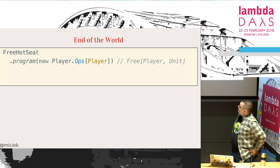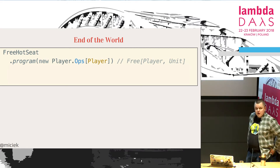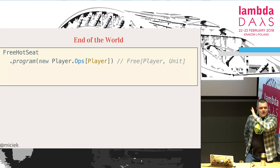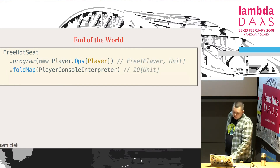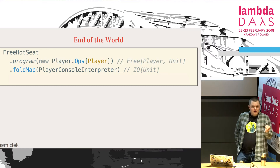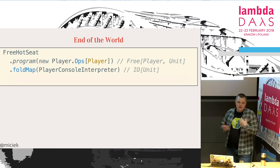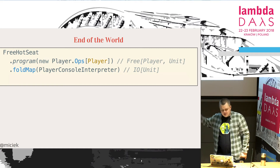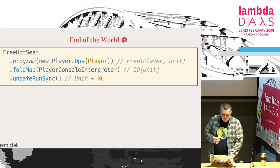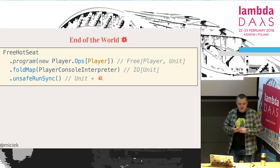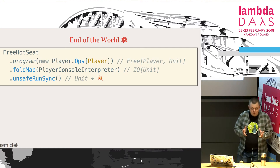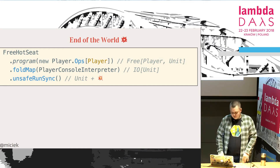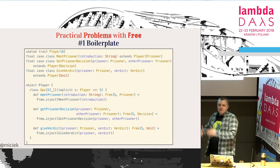Finally, let's run the program. The function we created using for comprehension returns Free[Player, Unit]. When we run something like that, nothing happens — the program exits because this is just a value. We need to foldMap it, meaning interpret it using our player console interpreter, interpreting into IO. If we just run that, still nothing happens. What we need is to unsafeRunSync on the IO, and we'll get unit at the end — and the side effects that are the game in the console that we get.